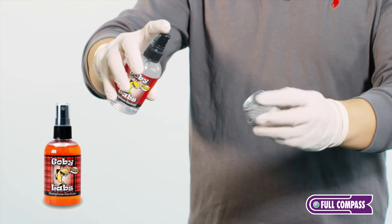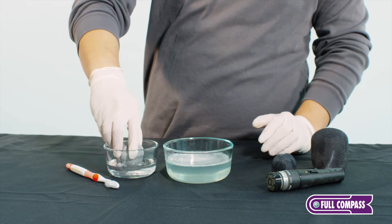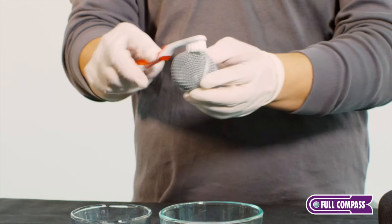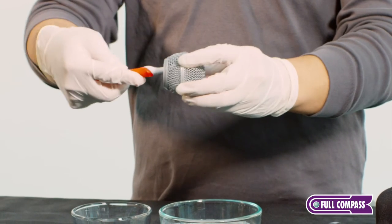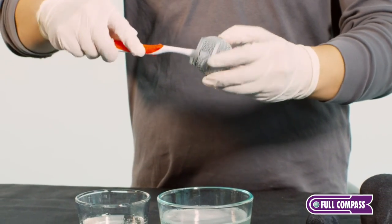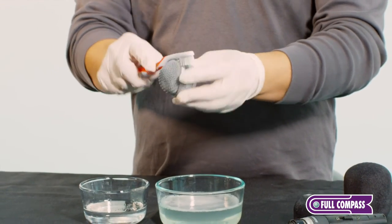Spray or dip the metal grille in an approved microphone cleaning solution or 70% alcohol solution. After you've dipped the grille, you can use a soft toothbrush and the alcohol solution to clean any remaining residue or lipstick on the grille. This should air dry pretty quickly.